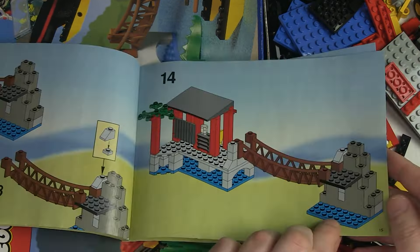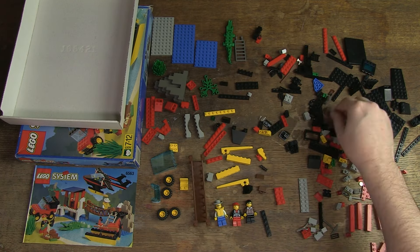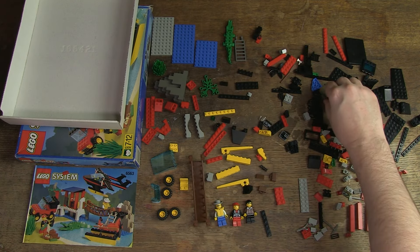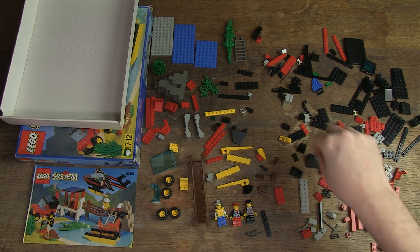The set consists of 233 parts and three minifigs. It has the theme town with the sub-theme leisure. Here you can see all the parts on the table. I immediately notice that I find very few basic bricks. I also see a bit of everything.